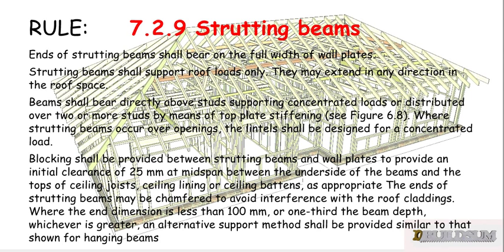The ends of the strutting beams may be chamfered to avoid interference with the roof cladding. Where the end dimension is less than 100mm or one-third of the beam depth — whichever is greater — an alternative method shall be provided, similar to that shown for hanging beams.